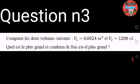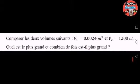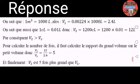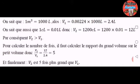Exercice numéro 3. Comparer les deux volumes suivants : V1 égale 0,0024 m³ et V2 égale 1200 centilitres. Quel est le plus grand et combien de fois est-il plus grand ? Réponse. On sait qu'un mètre cube égale 1000 litres. Alors, V1 égale 0,0024 fois 1000 litres égale 2,4 litres.